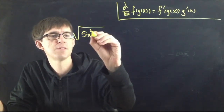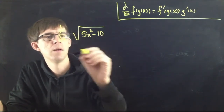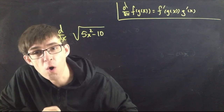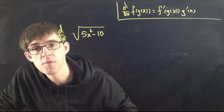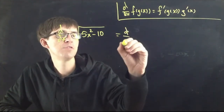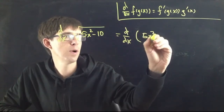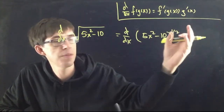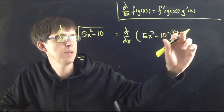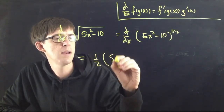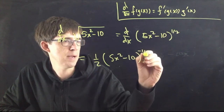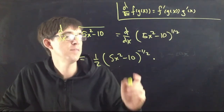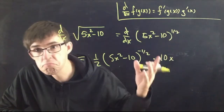How about the derivative of the square root of (5x² − 10)? Rewrite the square root as a fractional exponent: (5x² − 10)^(1/2). Now it looks just like the other examples. Apply the chain rule: bring the 1/2 down, write the same thing on the inside, decrease the exponent to −1/2, then multiply by the derivative of the inside, which is 10x. So the answer is (1/2)(5x² − 10)^(−1/2) · 10x.